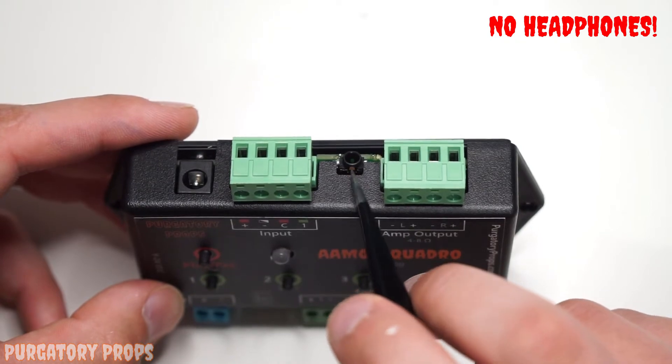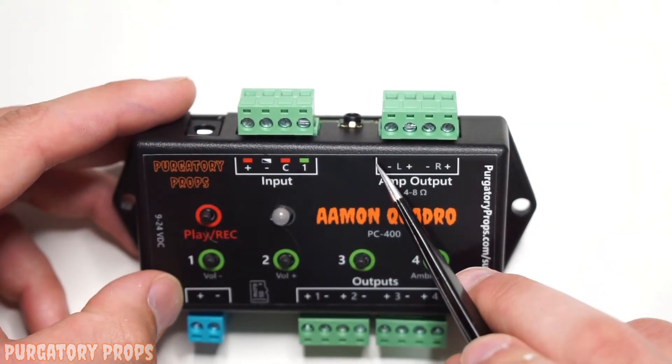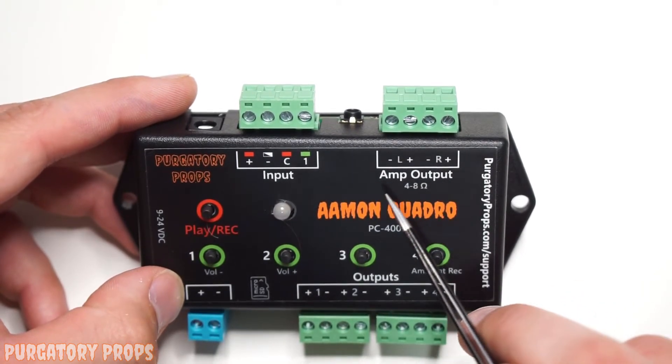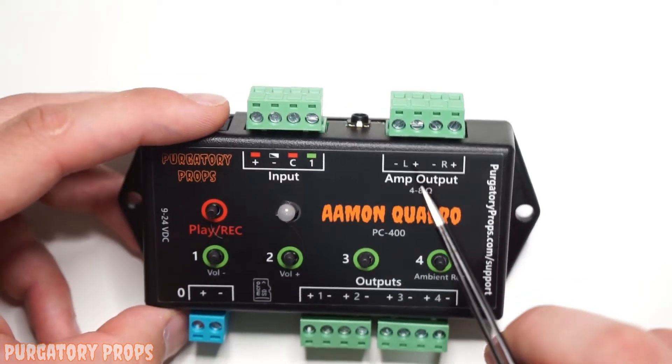Here we have a stereo jack so you can connect up powered speakers like computer speakers or a PA speaker. But if you have unpowered speakers you have left and right stereo channels here and that's connected up to a 30 watt amplifier.